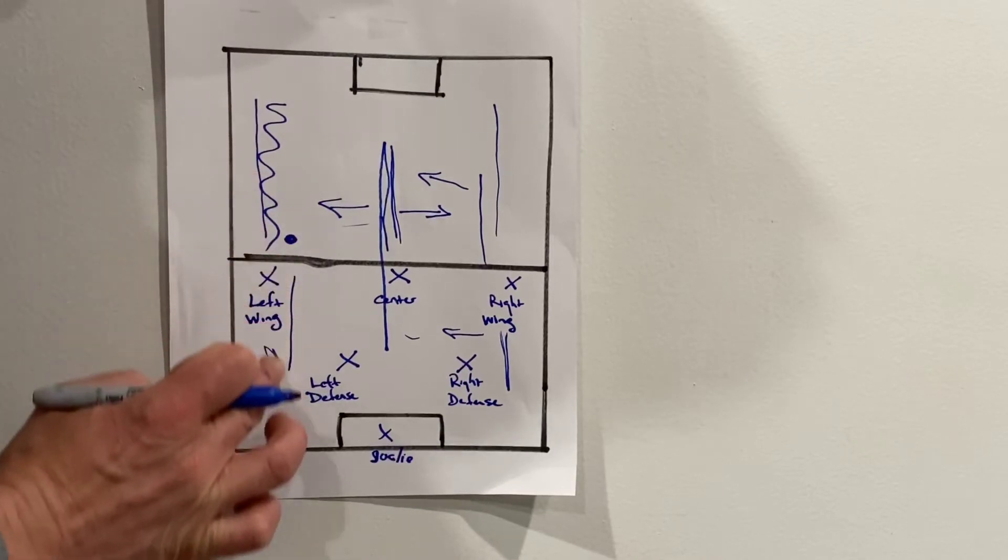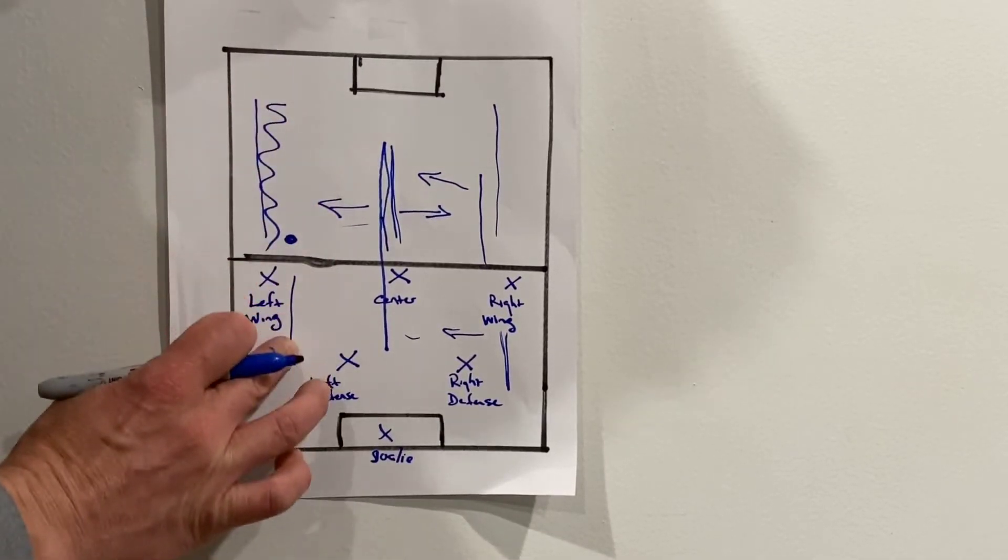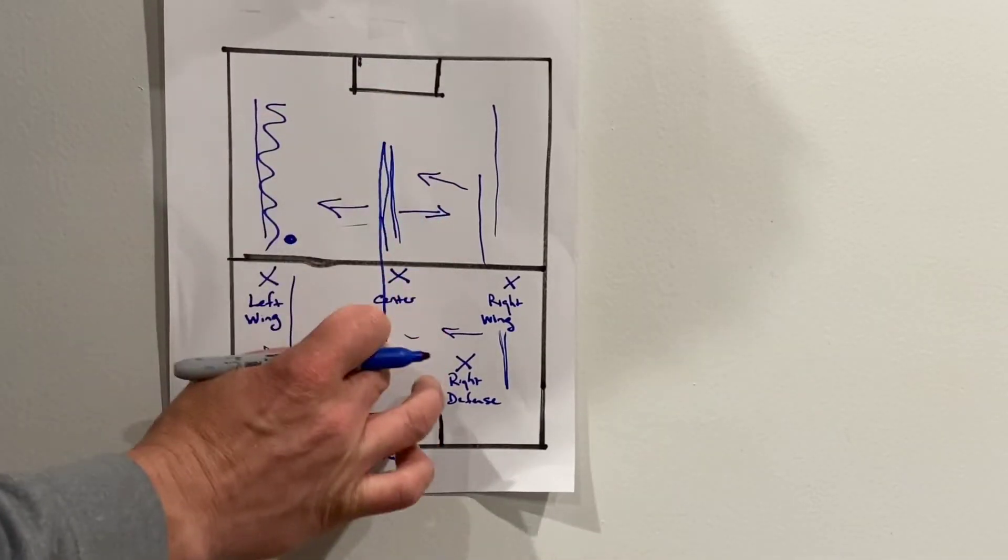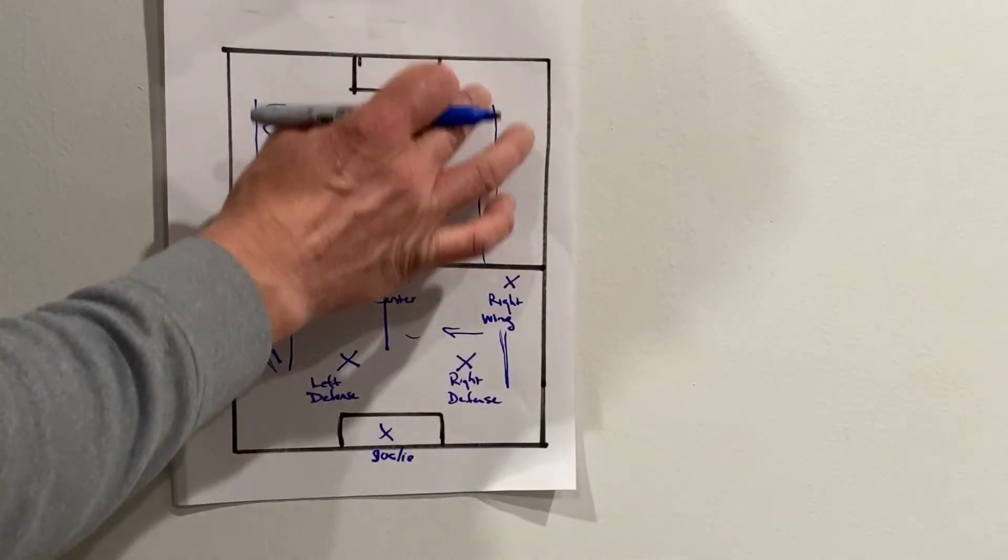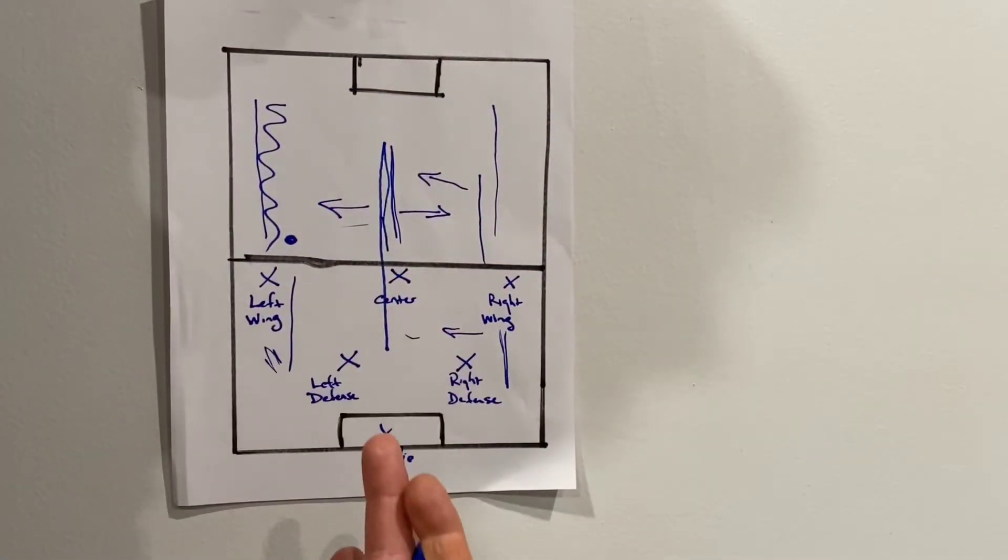So the left wing has this whole area right here. The center has the center of the field. He can go to the right or the left. The right wing goes up and down and that's his responsibilities right there.